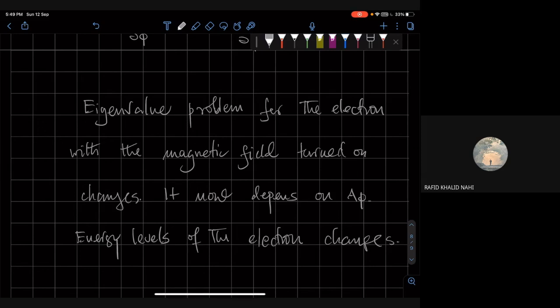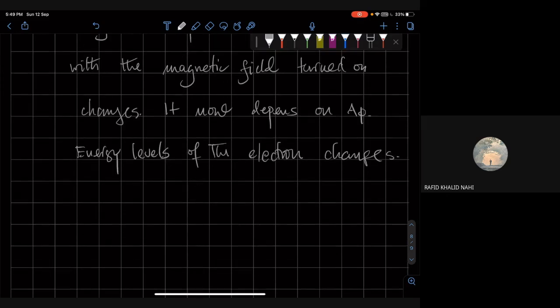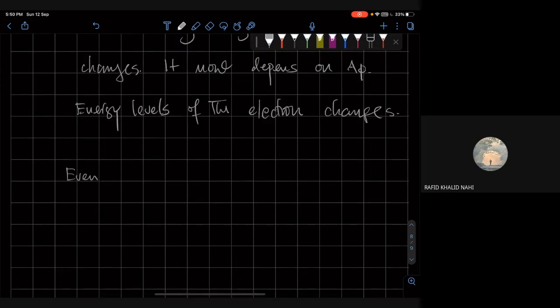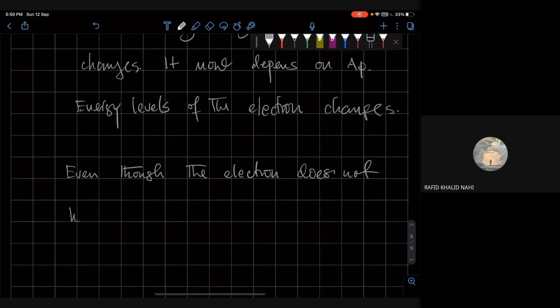So even though the electron does not have access to—and this is the important bit—even though the electron does not have any direct contact with the non-zero B field...